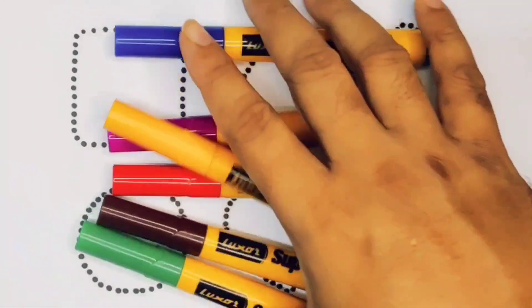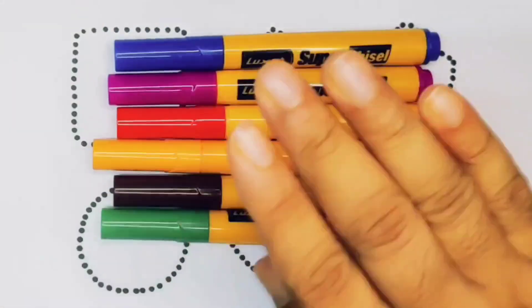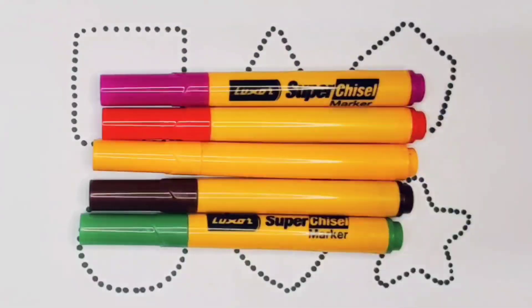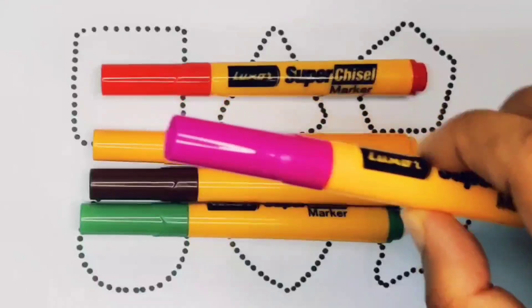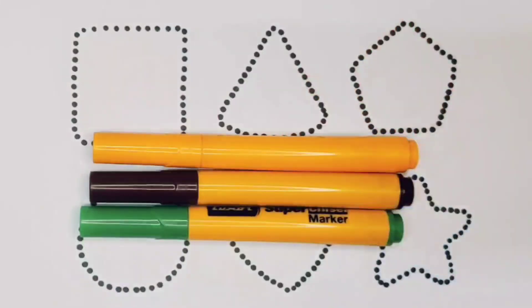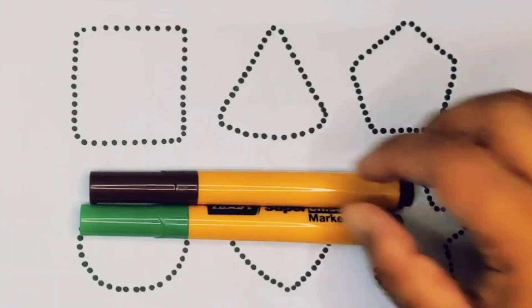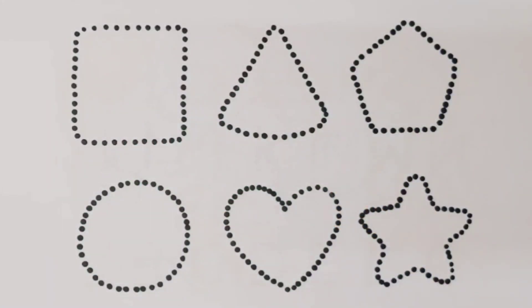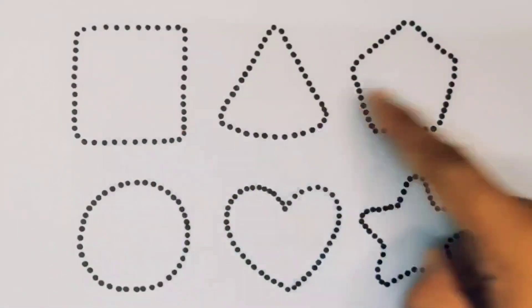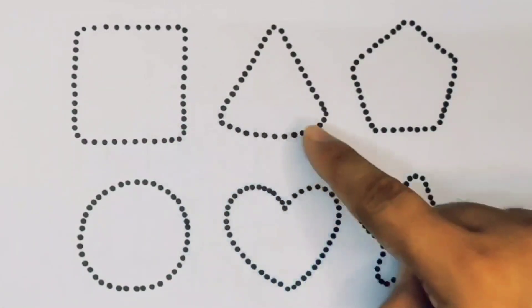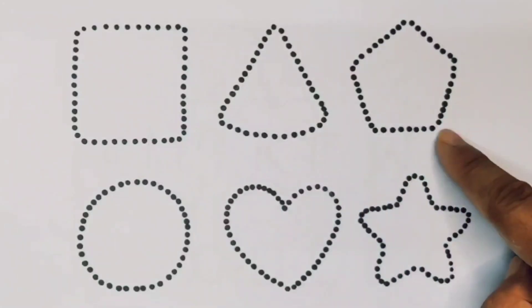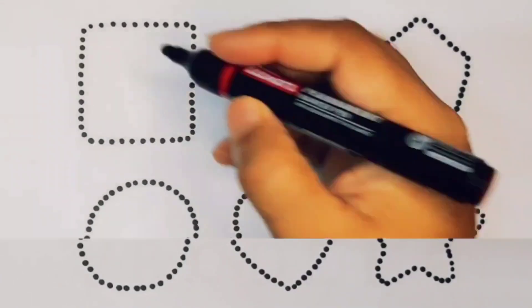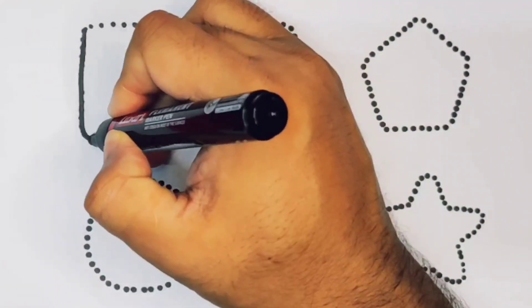Hello kids, welcome to my new video. First we're going to know the colors name: blue color, pink color, red color, orange color, chocolate color, green color, and black color. Now let's learn the 2D shapes: square, triangle, pentagon, circle, heart, and star. First we're going to draw the shapes square.